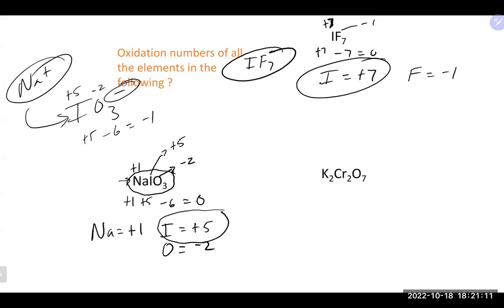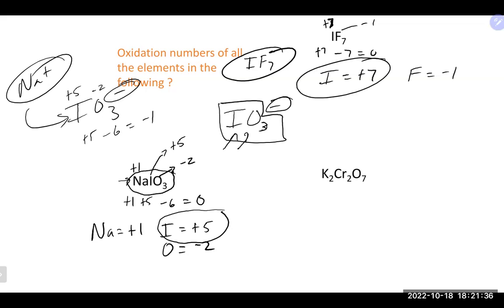An important shortcut: if you have a polyatomic ion in a compound, you don't need to calculate oxidation states for each element individually. The overall charge of the polyatomic ion already did the math for you. For example, the iodate ion IO₃⁻ has an overall charge of −1, so when calculating for the whole neutral compound, you just use −1 for the whole iodate group.